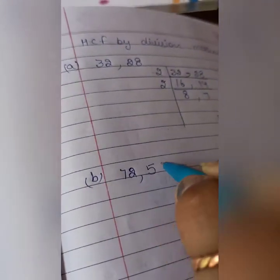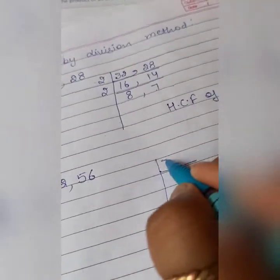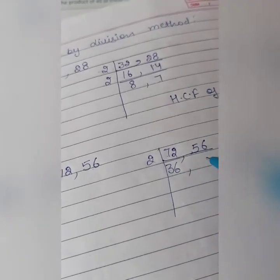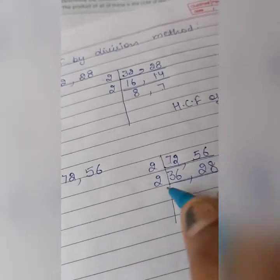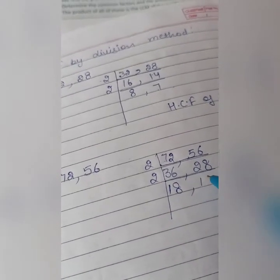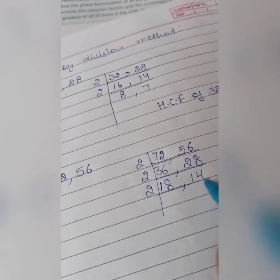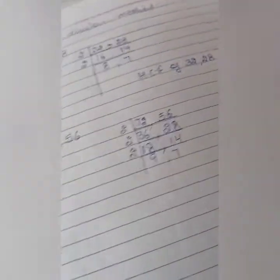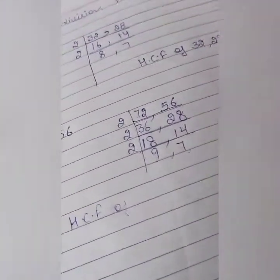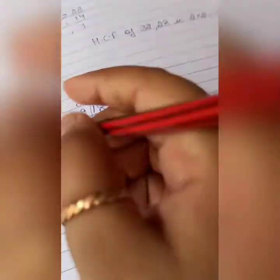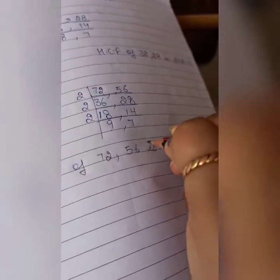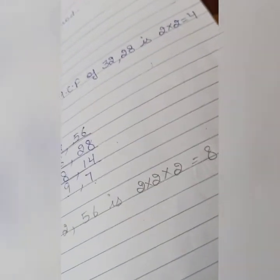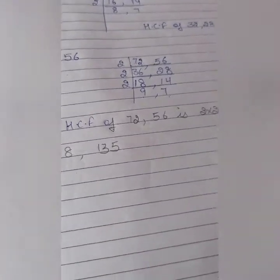Next number, B part, is 72, 56. Same, 72, 56. Both numbers are even, divide with 2. 2 threes are 6, 1, 2 sixes are 12, 2 twos are 4, 1, 2 eights are 16. Once again, 2 ones are 2, 2 eights are 16, 2 ones are 2, 2 fours are 8. Again, 2 nines are 18, 2 sevens are 14. So HCF of 72, 56 is 2 times 2 times 2 times 2 equals 8.